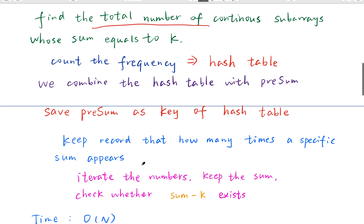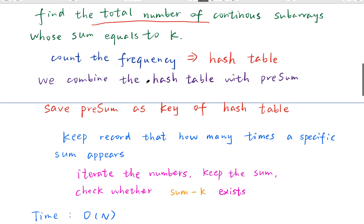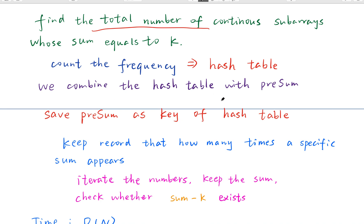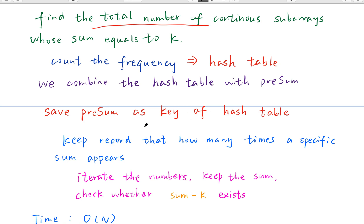Let's return to this problem. If we want to find the total number of continuous subarrays whose sum equals k, we need to count the frequency — how many times each subarray sum appears. We can use a hash table, since we usually use hash tables to count frequency for a specific key. So for this problem, we can combine the hash table with the prefix sum, saving the prefix sum as the key of the hash table, representing how many times that prefix sum appears.